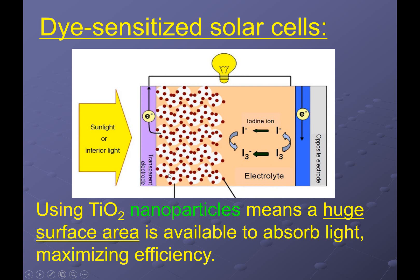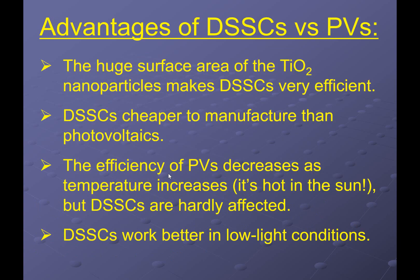We're going to compare how the DSSC compares to just a generic photovoltaic — a very common design they like to ask about. Because of that really large surface area of the TiO2 nanoparticles, there's a lot of room for sunlight to strike, promote electrons, and excite those dye molecules. That makes DSSCs, in general, very efficient. When we design these, the materials needed are typically much cheaper than engineering vast arrays of photovoltaics cascading one after the other.